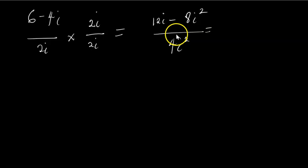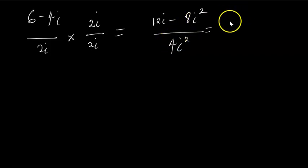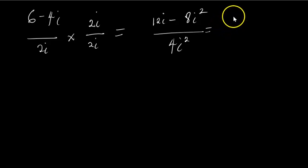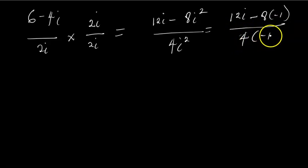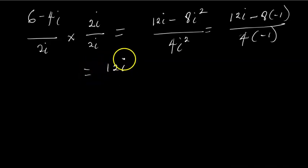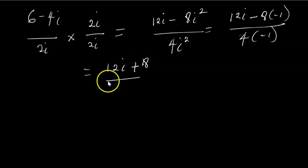In our last lesson we showed you via the multiplication of complex numbers that i² is the same thing as -1. In case you missed that lesson, please check the description below where we place links to all our lessons on complex numbers. So this is the same thing as 12i minus 8i², where i² = -1, over 4 × (-1).